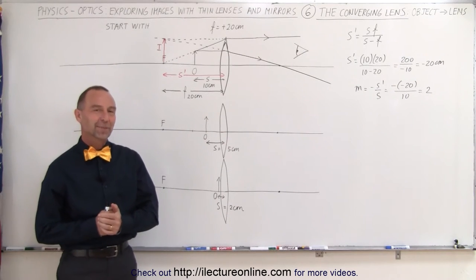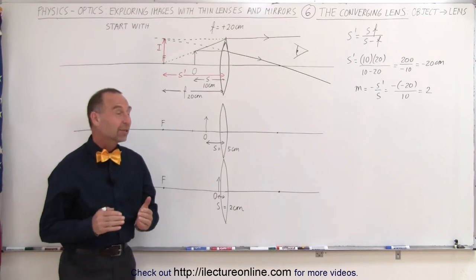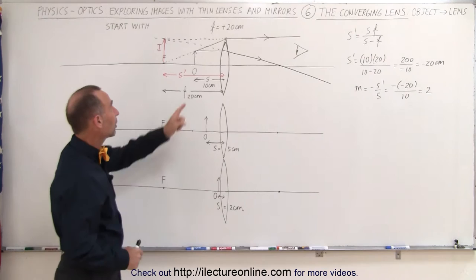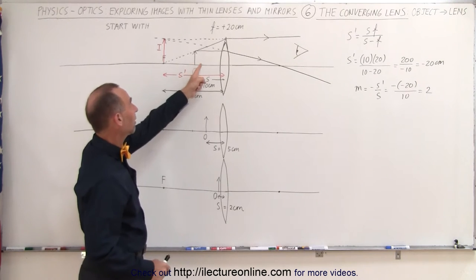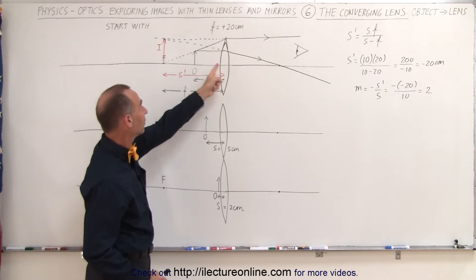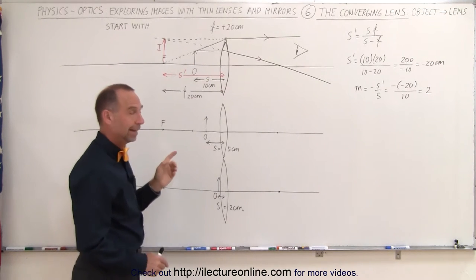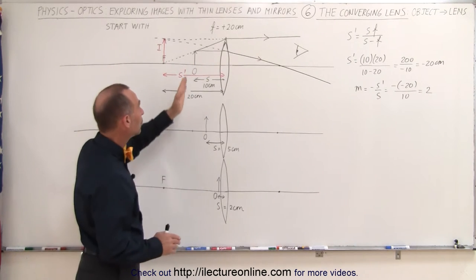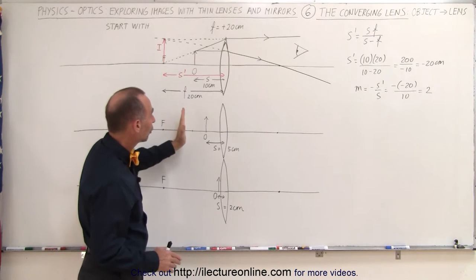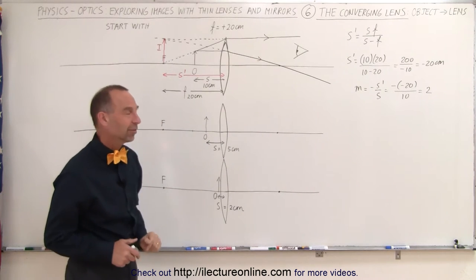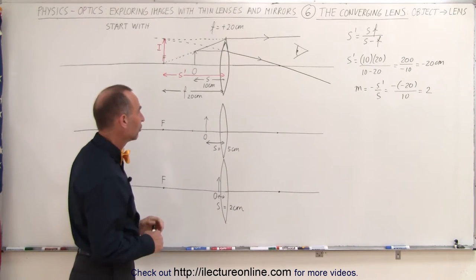Welcome to Electronline. Just like in the previous video, we're going to start with the object right halfway between the lens and the focal point. And now we're going to move the object closer to the lens and see what happens this time.